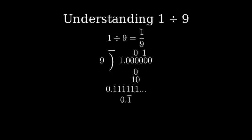This means that 1 divided by 9 as a decimal is 0.11111 repeating forever. This is why we often say that 1 ninth is equal to 0.1 repeating.